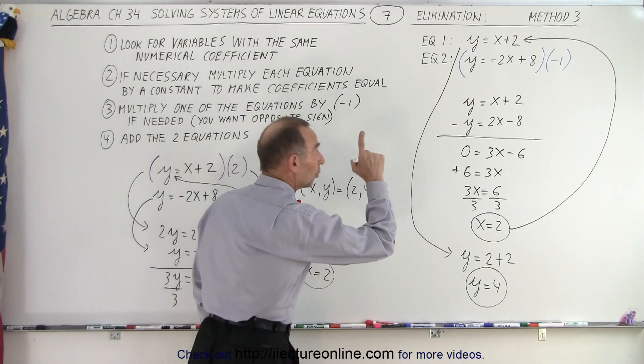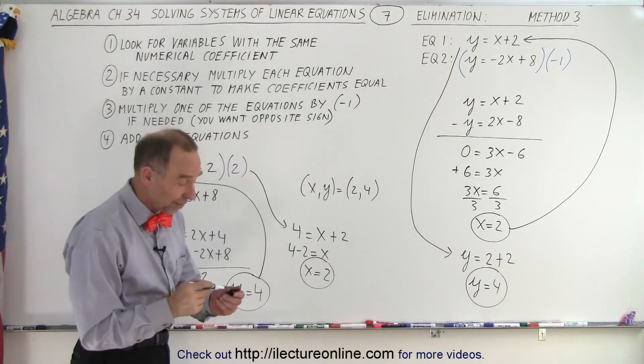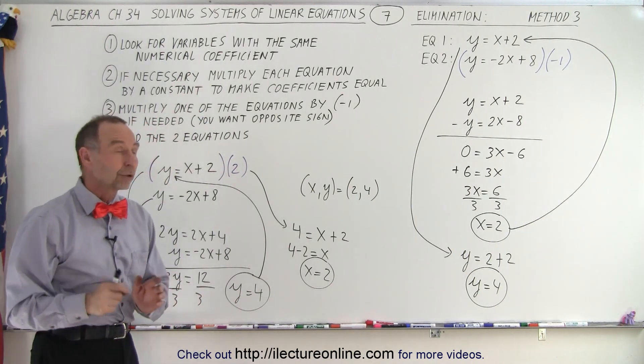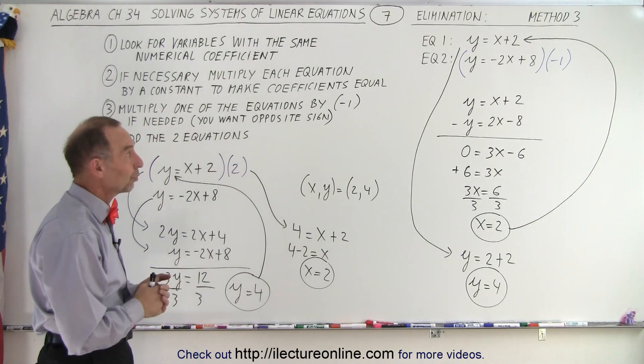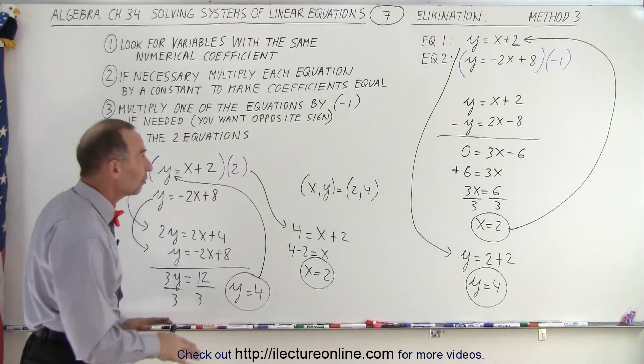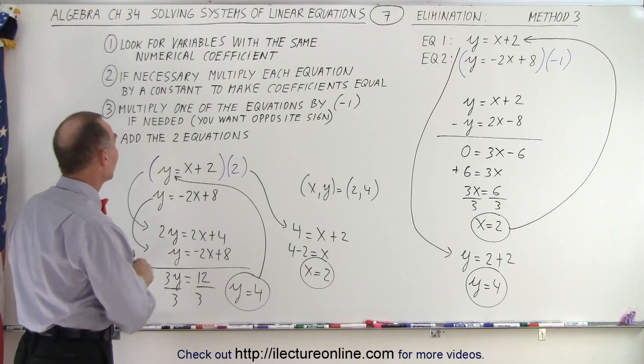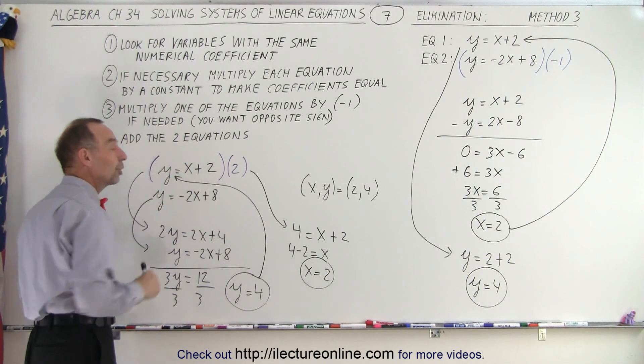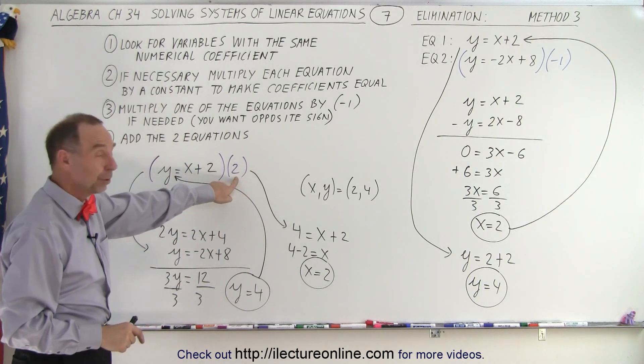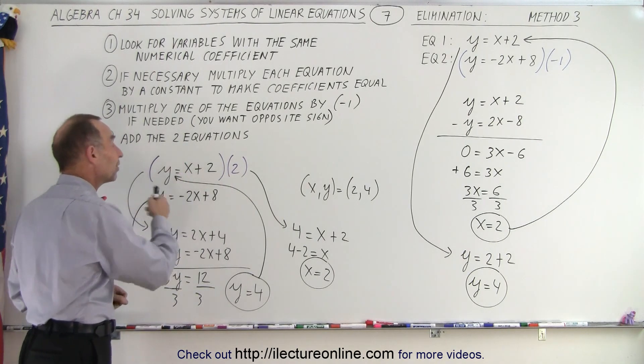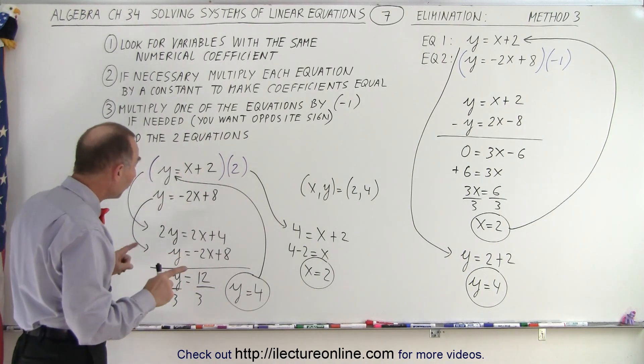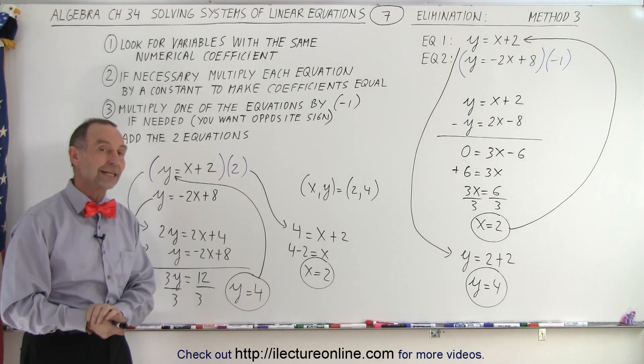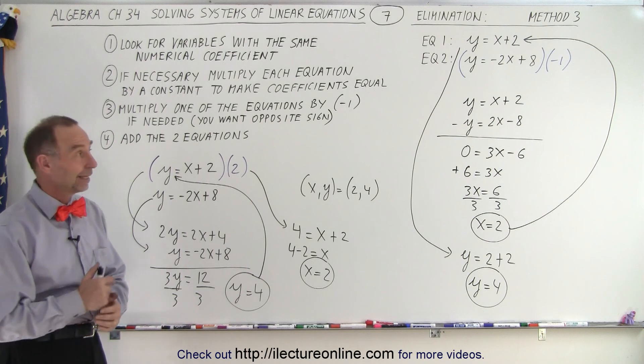Why did I eliminate the y variable? Because I was looking for variables with the same numerical coefficient, which in this case was y. But what if neither one of them has the same numerical coefficient? Then we use rule number 2. We go ahead and multiply one of the two equations by a number, a constant, to make the numerical value of the coefficient the same. Hopefully they're opposite in sign, so when you add them, it just simply gets eliminated. And that is how it's done in that case.